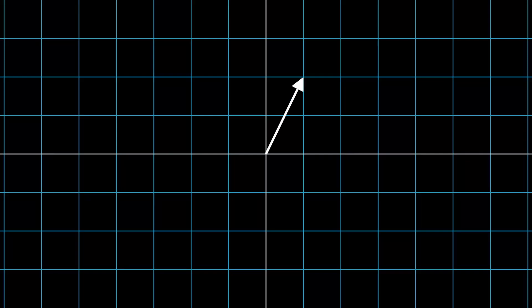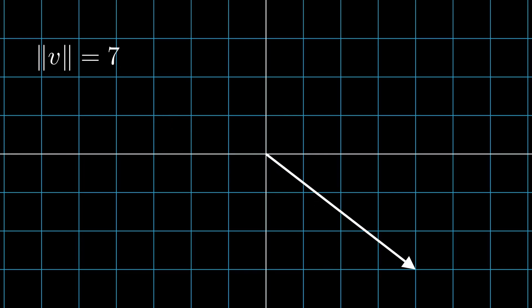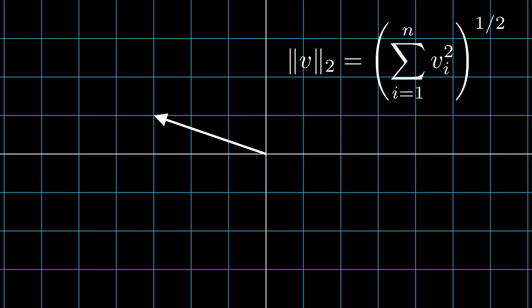When working with vectors in n-dimensional space, it's useful to give every vector some size. This is most often done by associating to each vector the distance of the origin to the endpoint. We call this the Euclidean norm. But this is not the only way we could assign a size.